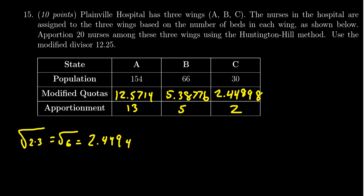And notice that 13 plus 5 plus 2 adds up to be 20, which then gives us a correct apportionment of the seats using the Huntington Hill method.